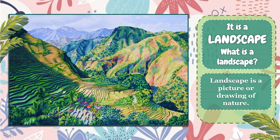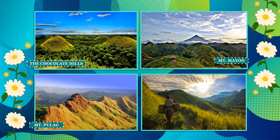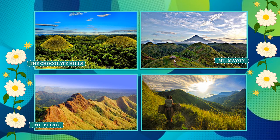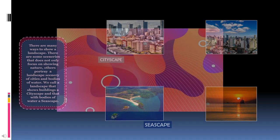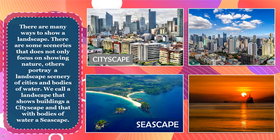Landscape is a picture or a drawing of nature. There are many ways to show a landscape. There are some sceneries that do not only focus on showing nature. Others portray a landscape scenery of cities and bodies of water. We call a landscape that shows buildings a cityscape, and that with bodies of water a seascape.